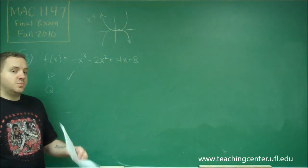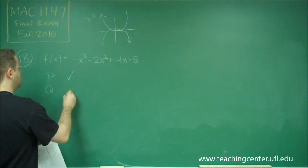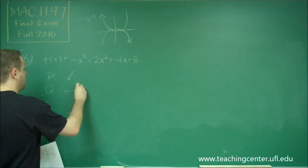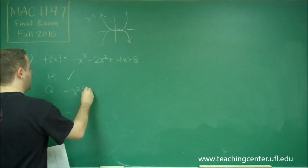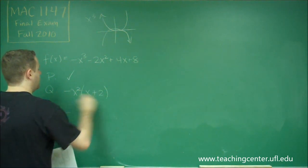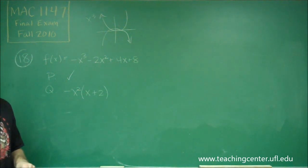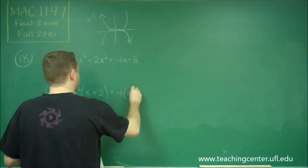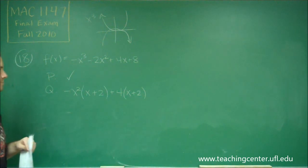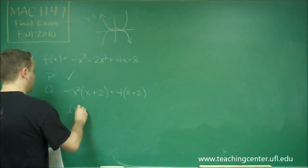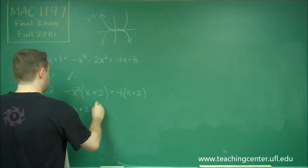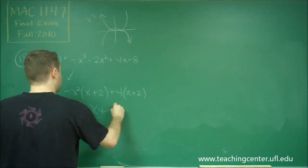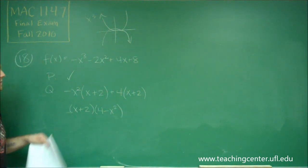In the first two terms, we can factor out a negative x squared, and we'd be left with x plus 2. And in the second two terms, we could factor out a 4, and then we could also put x plus 2. So now we can factor out x plus 2, and we have 4 minus x squared left over when we do that.